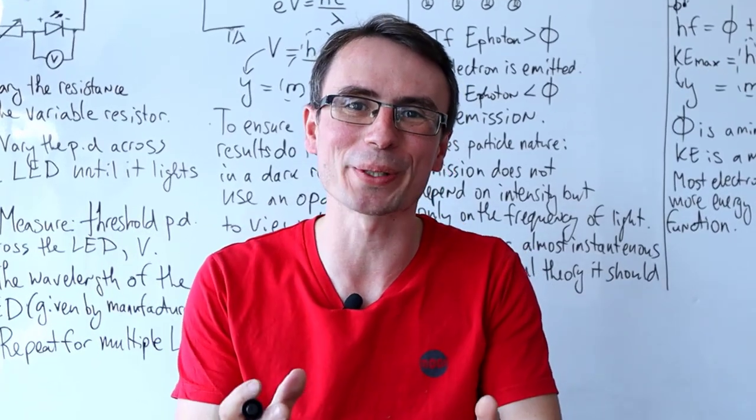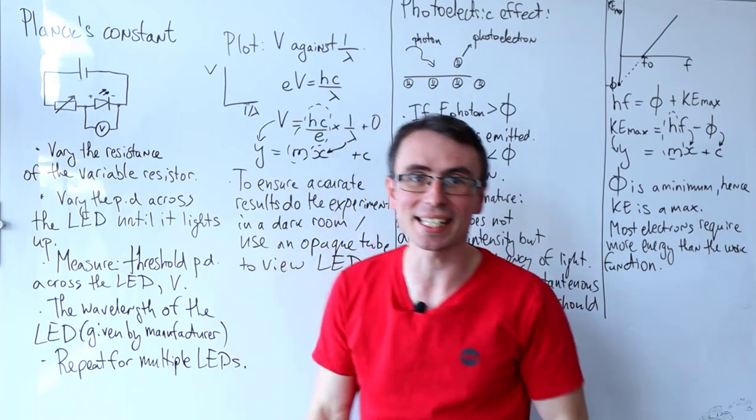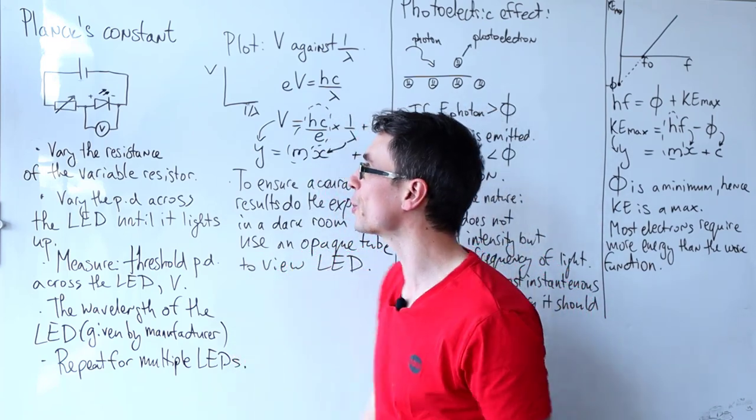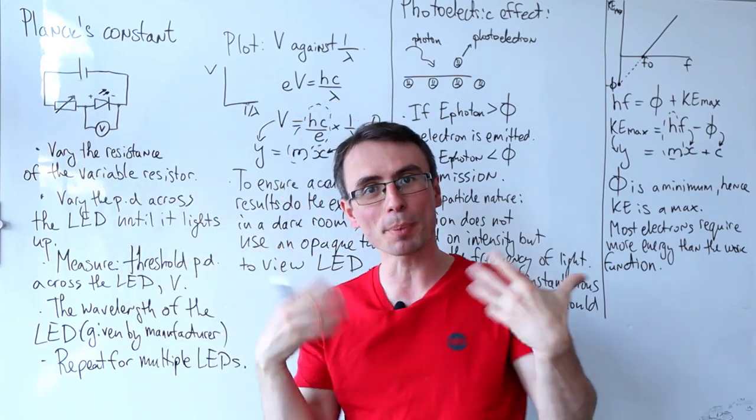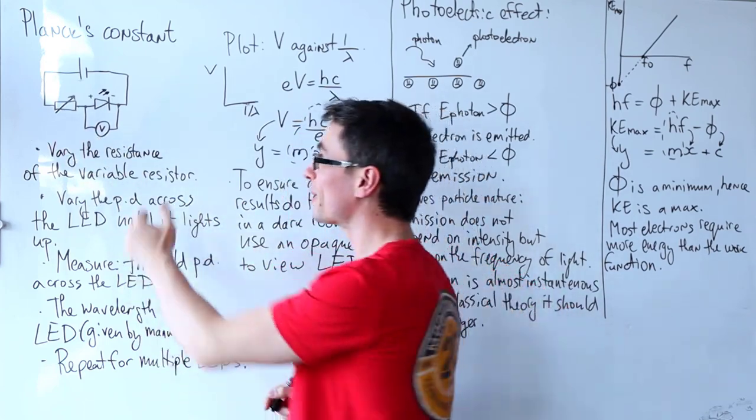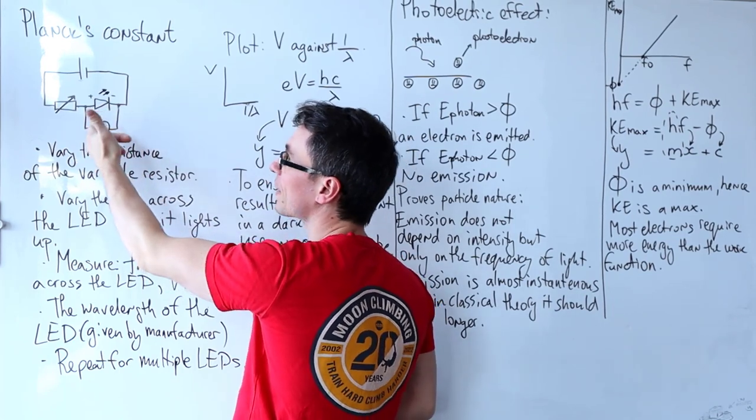Let's revise experiments in quantum physics. Finding Planck's constant using LEDs. There are several different circuits that we can use. Here I have a cell connected to a variable resistor, and the purpose of the variable resistor will be to vary the PD across this LED.